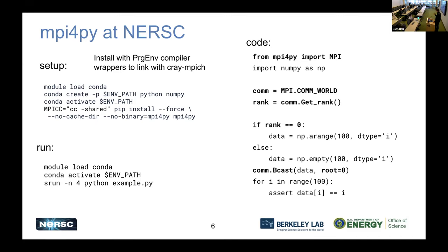To give you a sense of what the code looks like — in bold I've highlighted the MPI-specific lines that interact with the MPI for Py library. In this example, this is a parallel application where you create an array of data on one process and then broadcast it out to all the other processes. There's a much richer set of APIs available in MPI; this is just a quick example.